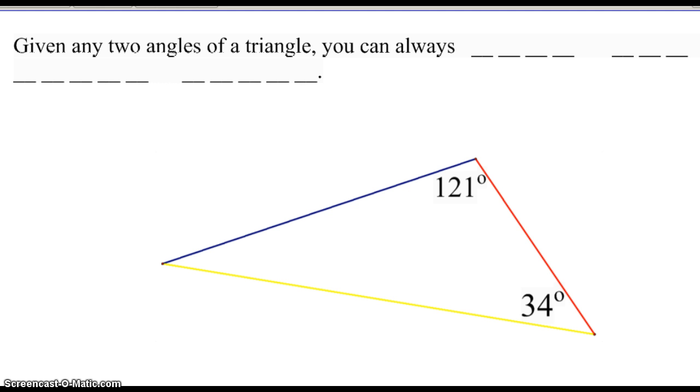So the first thing we're going to do is just refresh some stuff. Obviously, if we have a triangle here, and we know this is 121 and we know this is 34, could you find this angle here? Of course. So we take 180 minus 121 minus 34. So this angle here would be 25 degrees. So as a rule of thumb, if you're given any two angles of a triangle, you can always find the third angle.